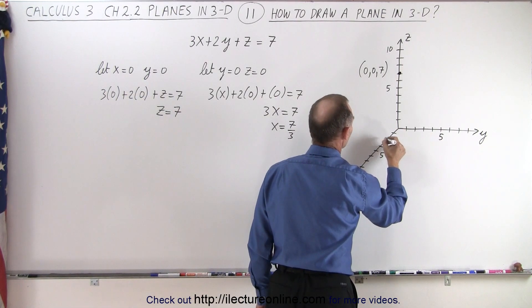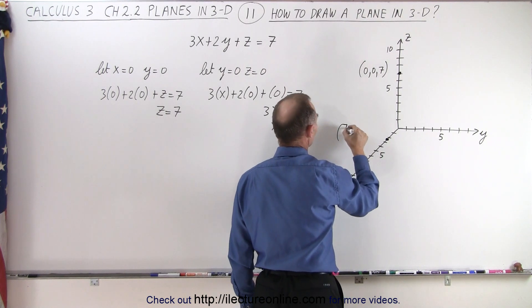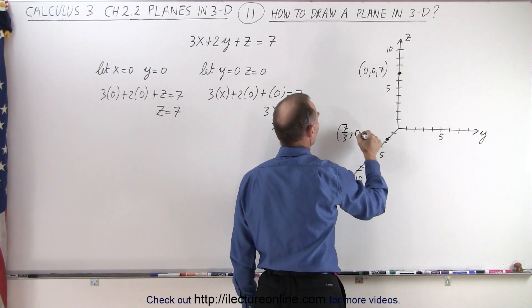So we find that point right here. That would be right about there. And so that's the point seven-thirds, zero, and zero.